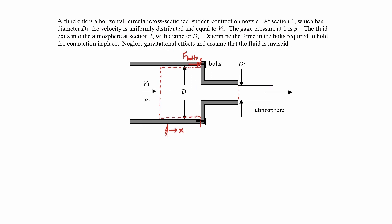Zooming in on a bolt: I'm essentially cutting it in half, and my control volume cuts right through it, so that the force one part of the bolt exerts on the other part is captured. The control volume cuts across the bolts and comes around the pipe. I need the force that the bolts exert on the control volume to appear, because I'm trying to find the force on the bolts.